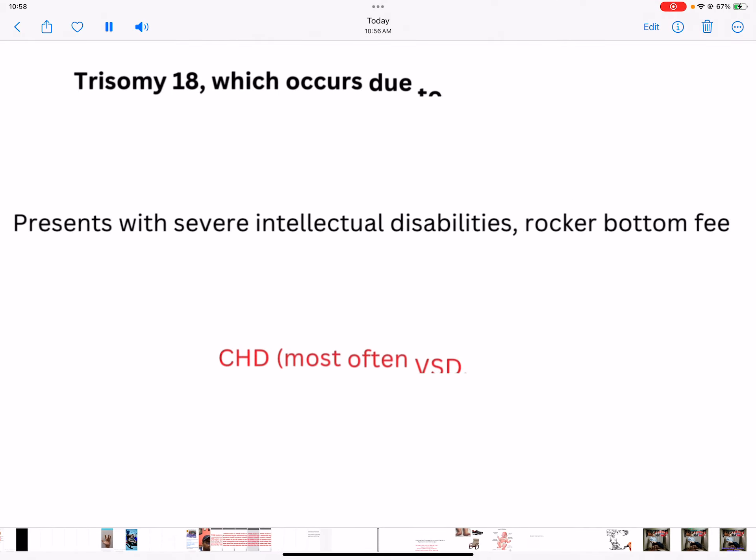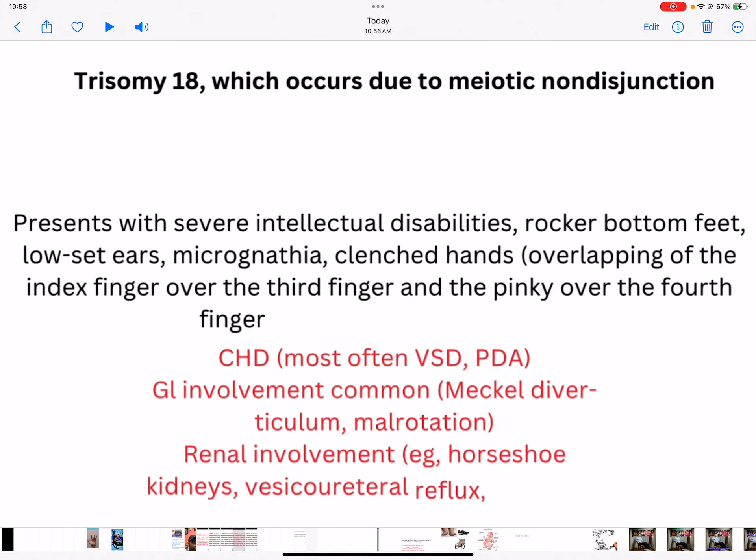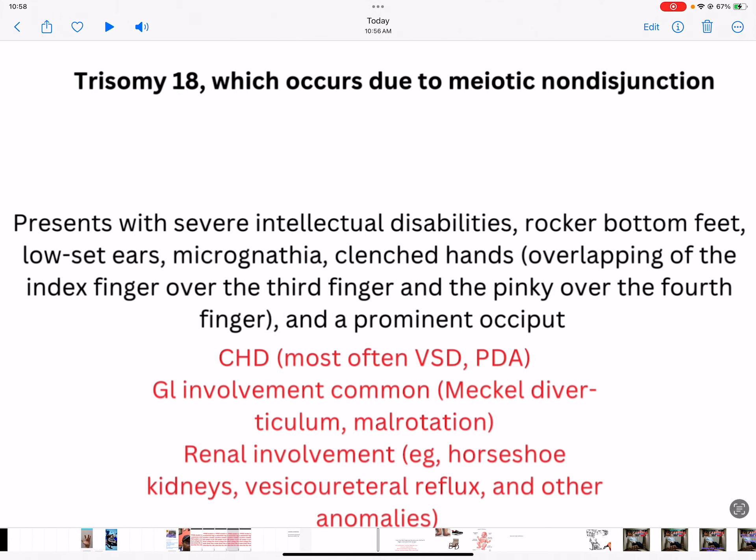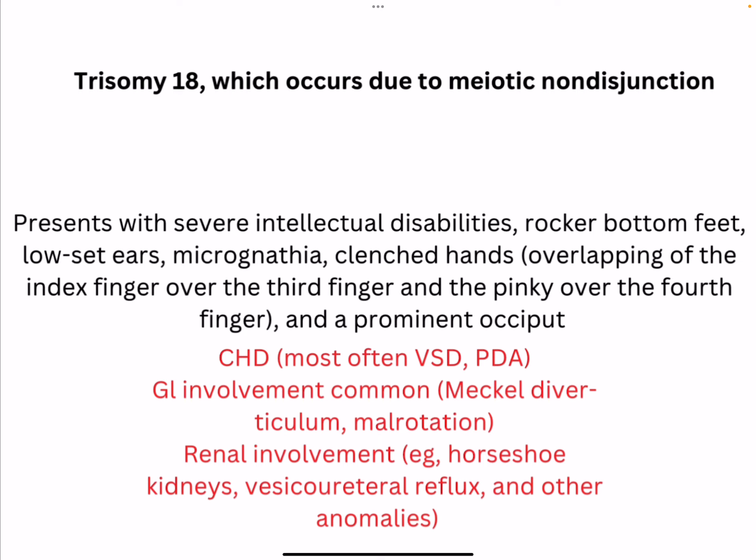Trisomy 18 occurs due to meiotic non-disjunction. The head is small — that is micrognathia. When the head is small, the amount of gray and white matter is less, which leads to intellectual disabilities. Also, because the face is small, there are low-set ears.